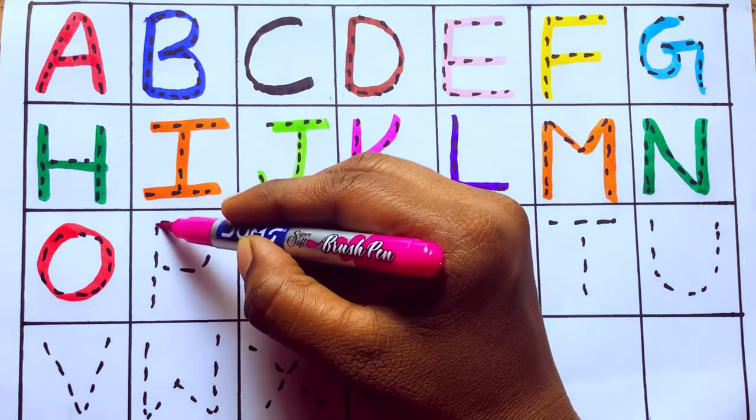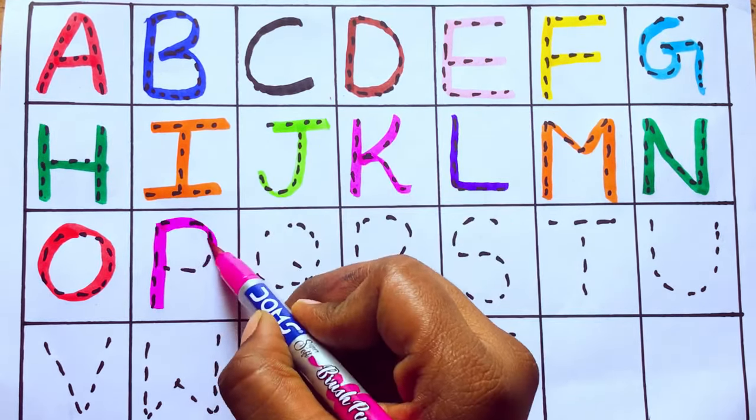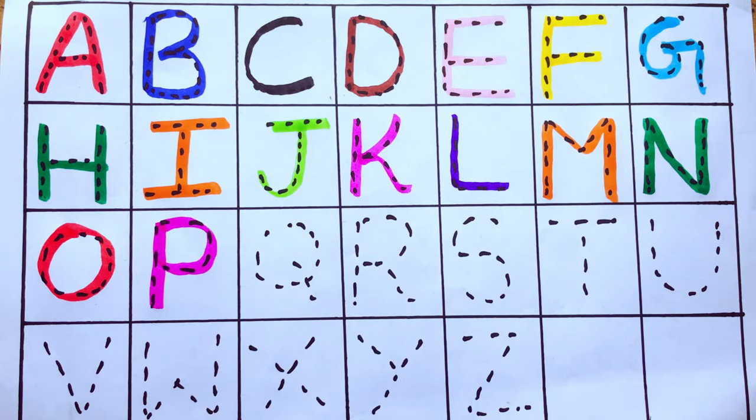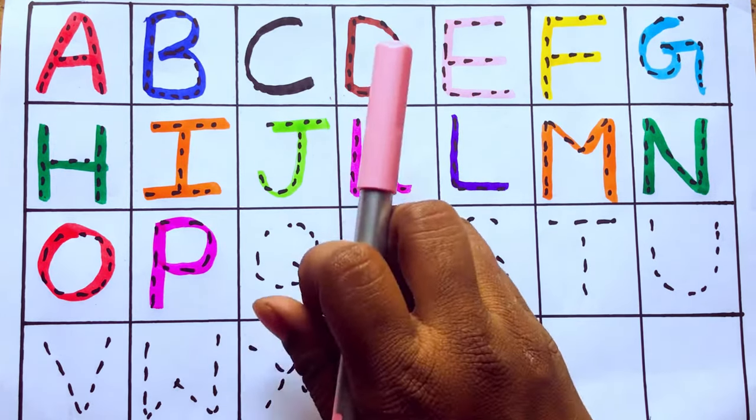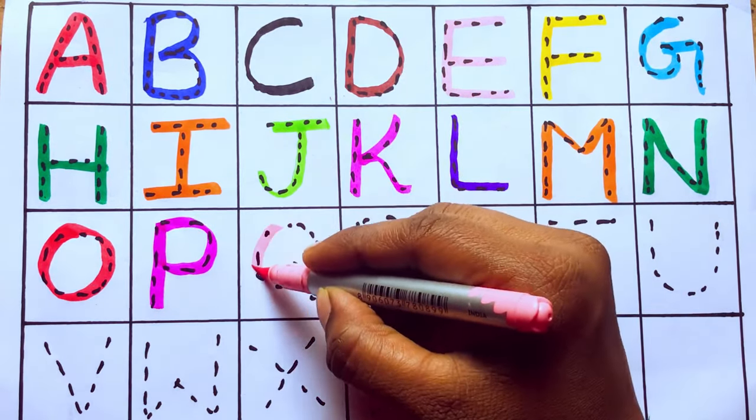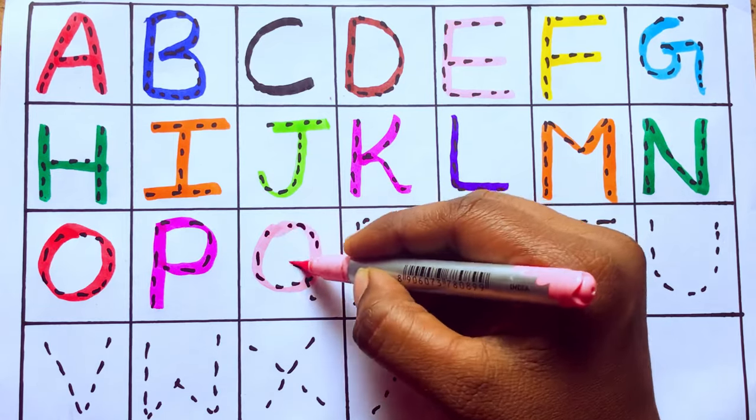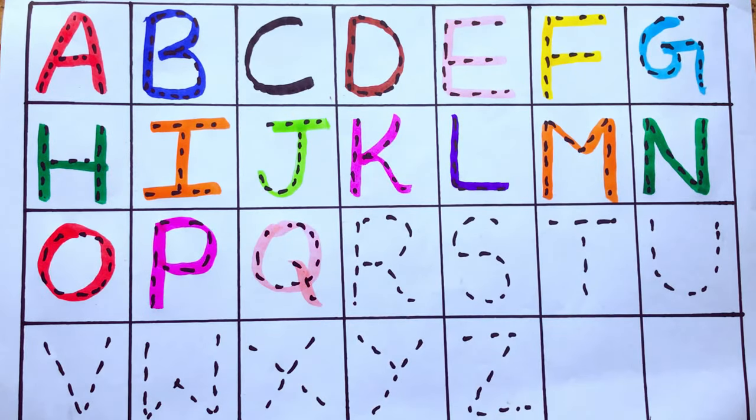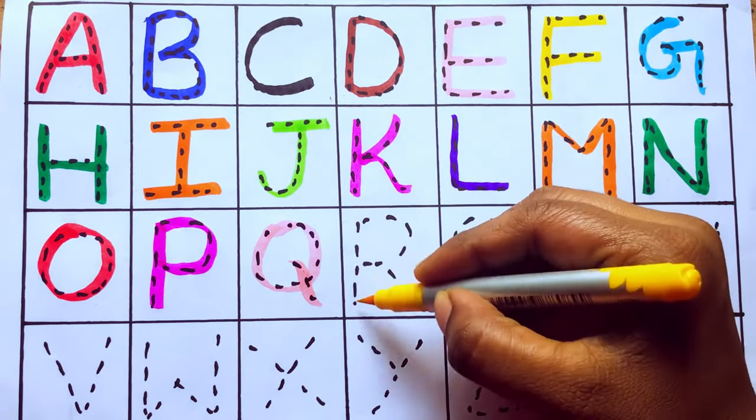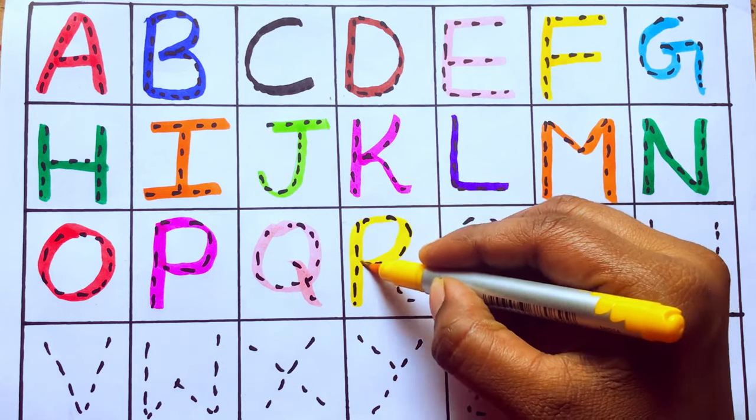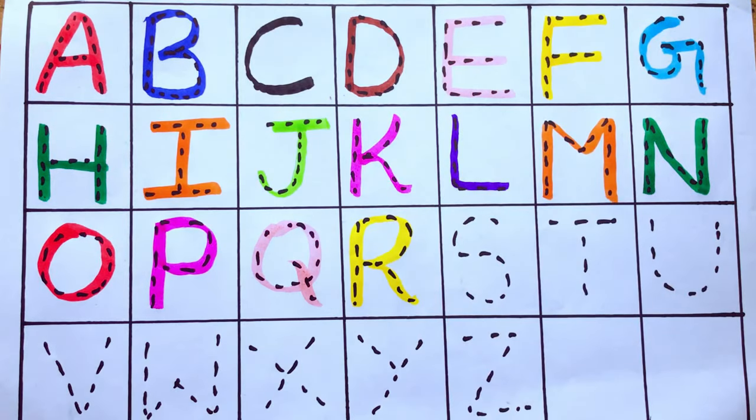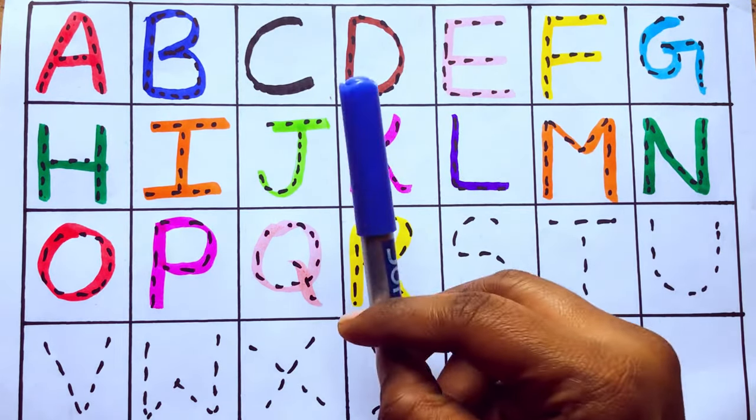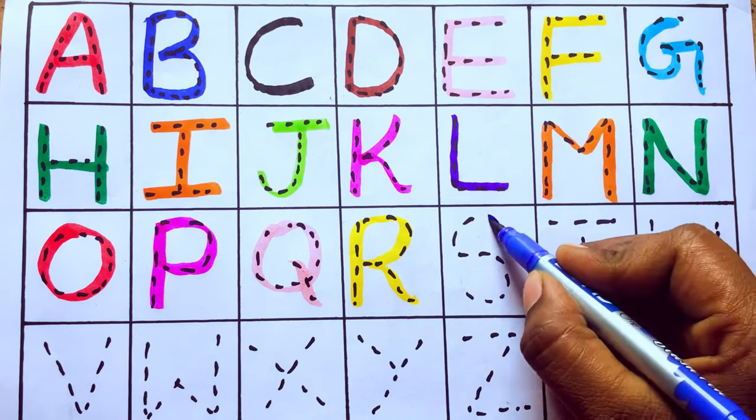Pink color. P for parrot, light pink color. Q for quarrel, yellow color. R for rose, blue color. S for sunflower.